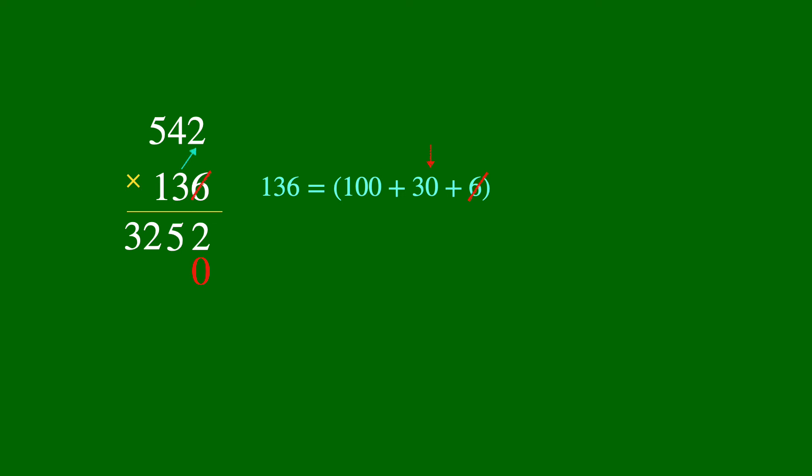Now we multiply 3 times 2 to get 6 and then 3 times 4 to get 12 and 3 times 5 is 15 plus 1 is 16. And we are done with the 3 or 30.